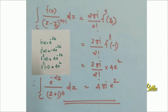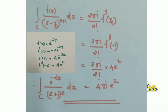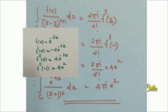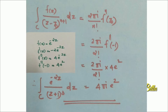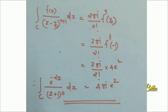Replacing f″(−1) in Cauchy's Integral Formula gives 2πi × 4e² divided by 2, which equals 4πie². On the left side, replacing f(z), Z₀, and N, we get the integral over C of e^(−2z) by (z+1)³ dz equals 4πie².